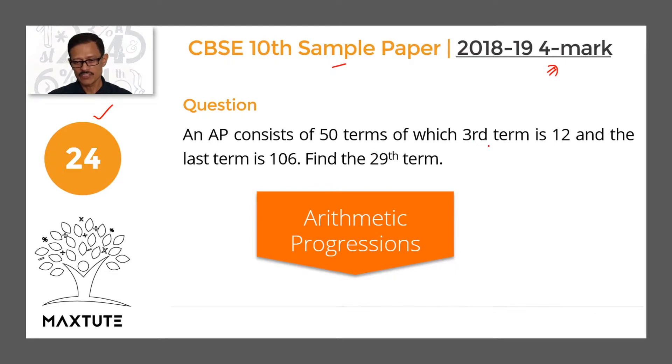An AP consists of 50 terms of which the third term is 12 and the last term, the 50th term, is 106. We need to compute the value of the 29th term.